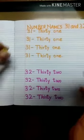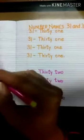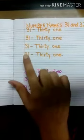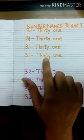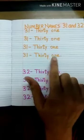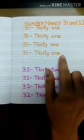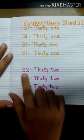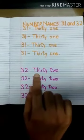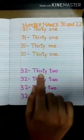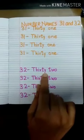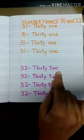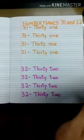And that's how we write 32. The spelling of 31 is t, h, i, r, t, y, o, n, e: thirty-one, 31. The spelling of 32 is t, h, i, r, t, y, t, w, o: thirty-two, 32. Thank you.